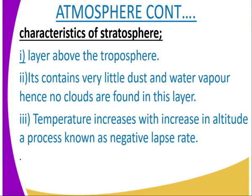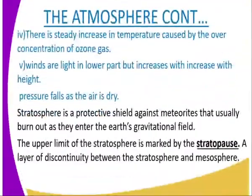The characteristics of the stratosphere: after the tropopause, we move to the stratosphere — the second layer above the tropopause. It consists of very little dust, water vapour, and snow clouds. The temperature increases with increase in altitude, a process known as negative lapse rate. This is caused because the stratosphere contains the ozone layer, which absorbs the ultraviolet rays that pass through the ionosphere, thermosphere, and mesosphere. When those rays reach the stratosphere, the ozone gas absorbs them, and that is why temperature increases with altitude. There is a steady increase in temperature due to the concentration of ozone gas.